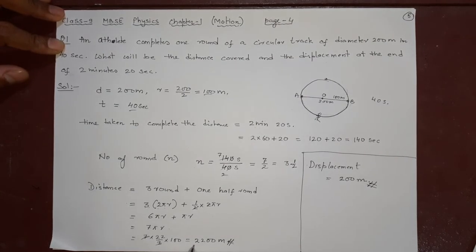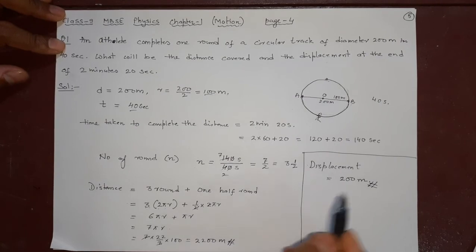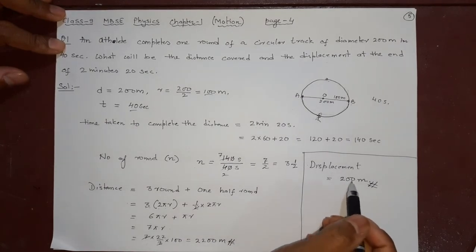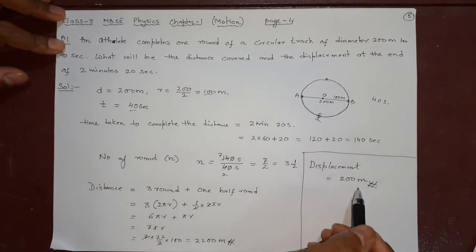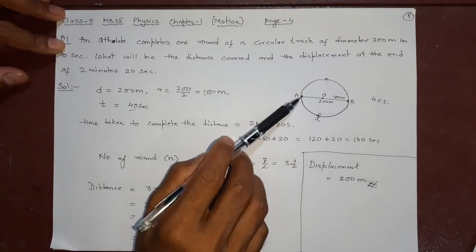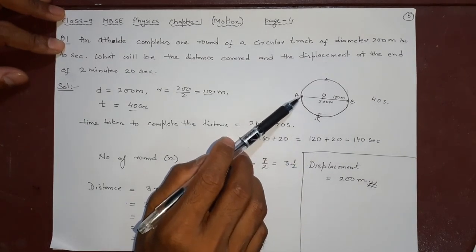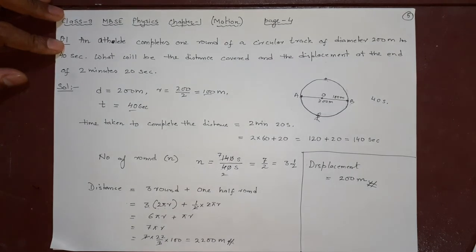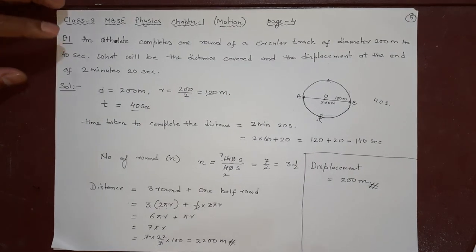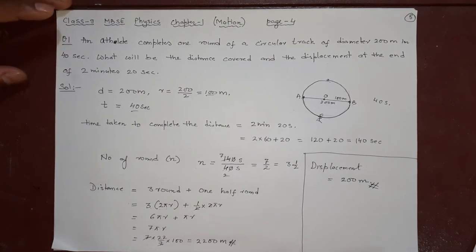This is the example of distance. See, 2,200 is the actual path covered, so that is why it is so long. But the only distance from the initial to the final point is 200 meters. If suppose it stopped in 3 rounds, then the displacement will be 0 because it reaches again the initial point. That is also you should know. So this is about that first problem. Thank you.